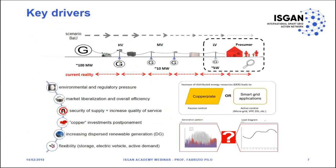We have some key drivers that are motivating the change. For sure there is environmental and regulatory pressure, market liberalization, and the need for improving efficiency in energy supply. We also have to improve security of supply, reliability, and quality of services. And we don't have enough money for all kinds of investment, so it is very important in many companies to postpone investments in copper and hard infrastructures.